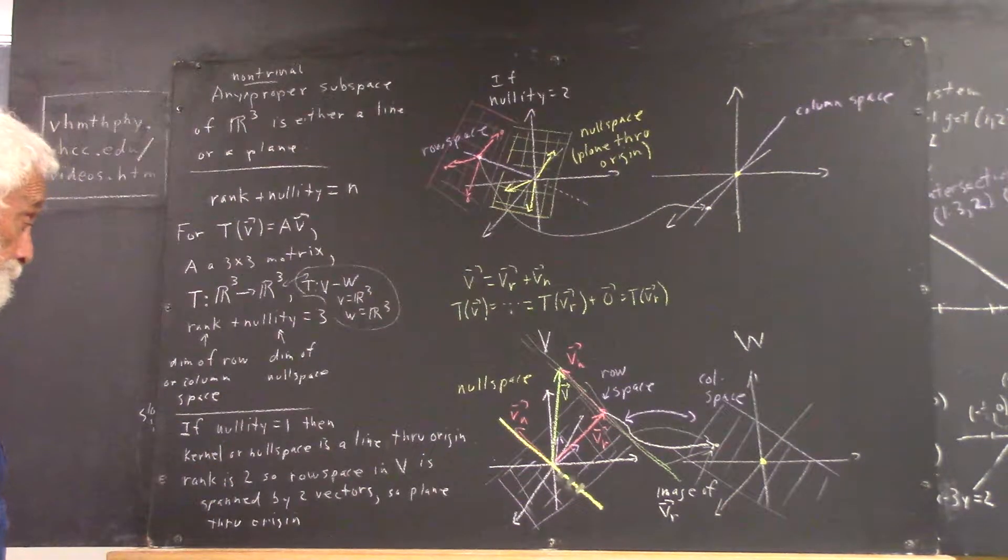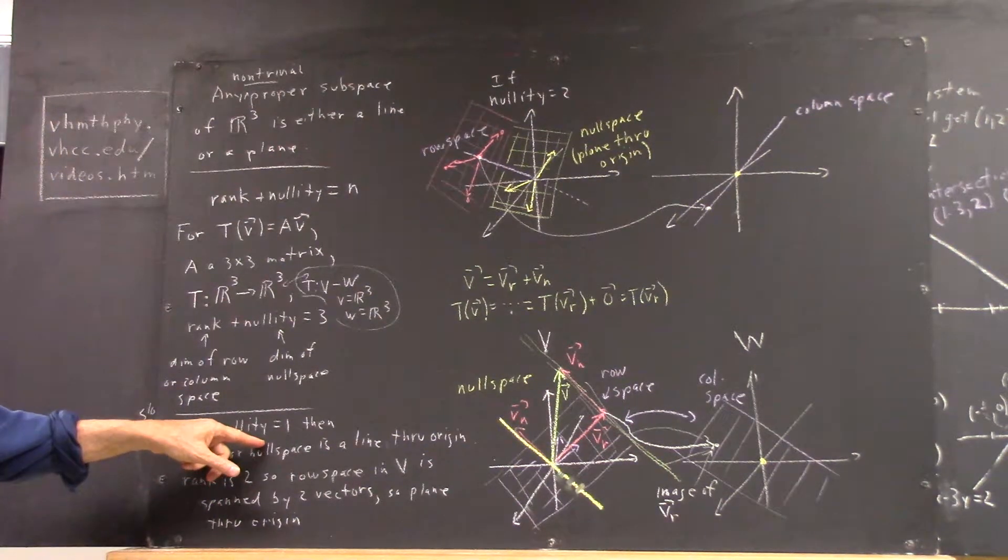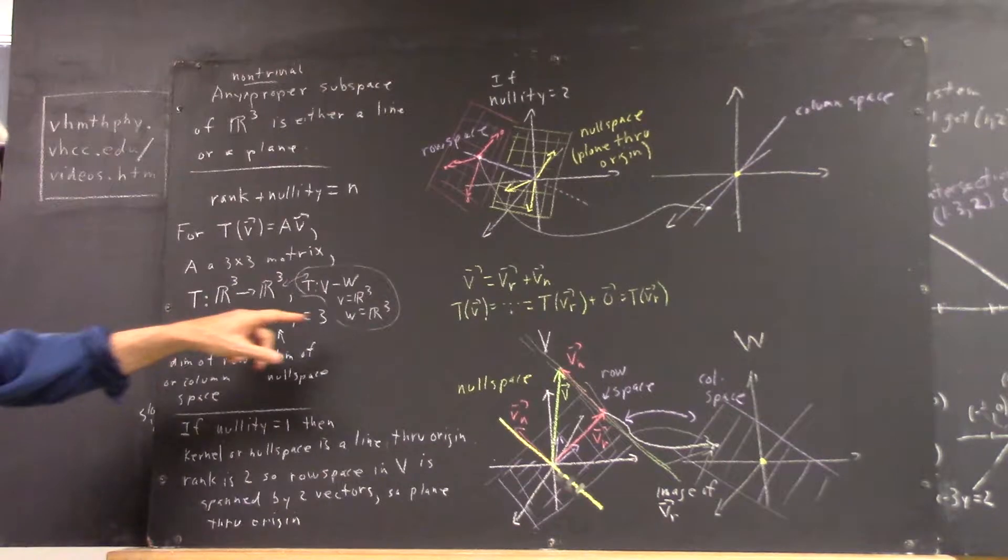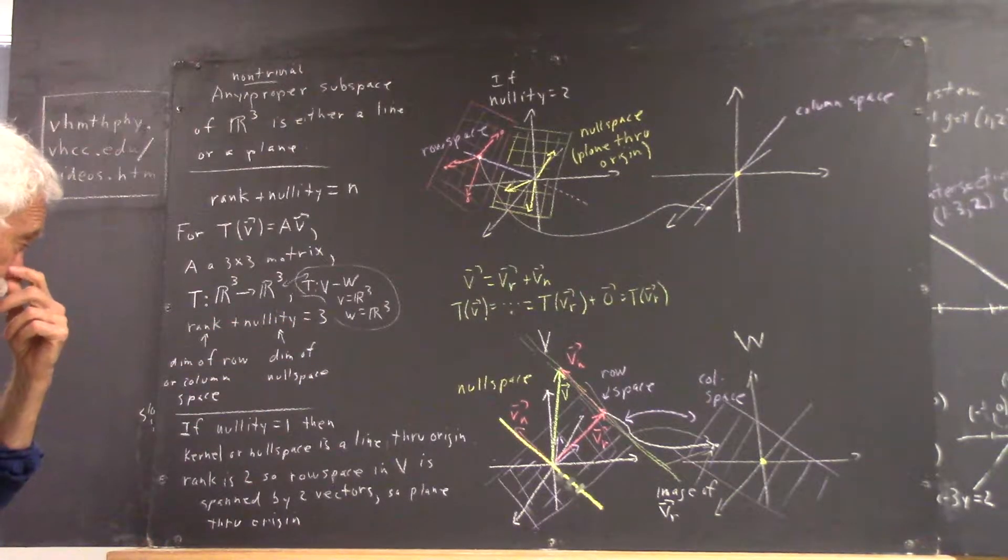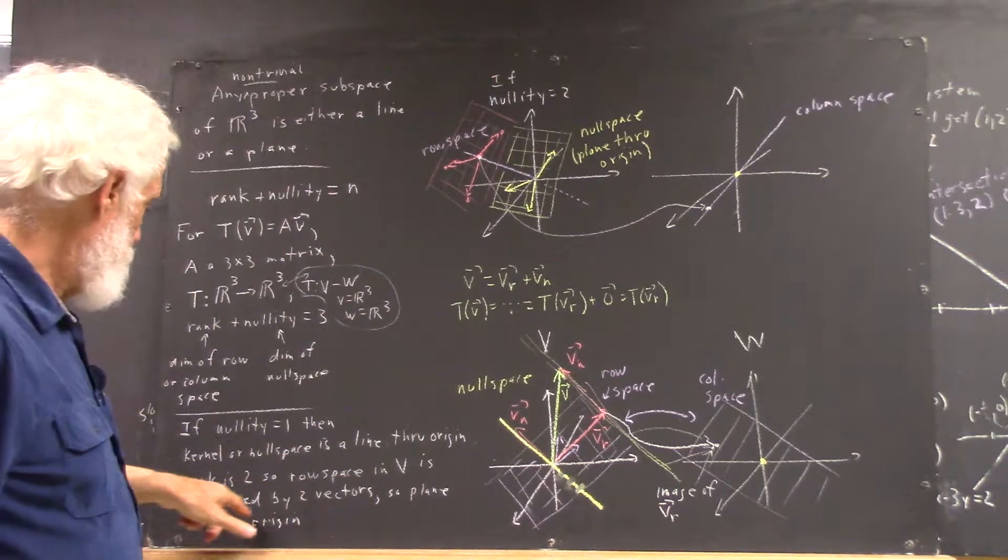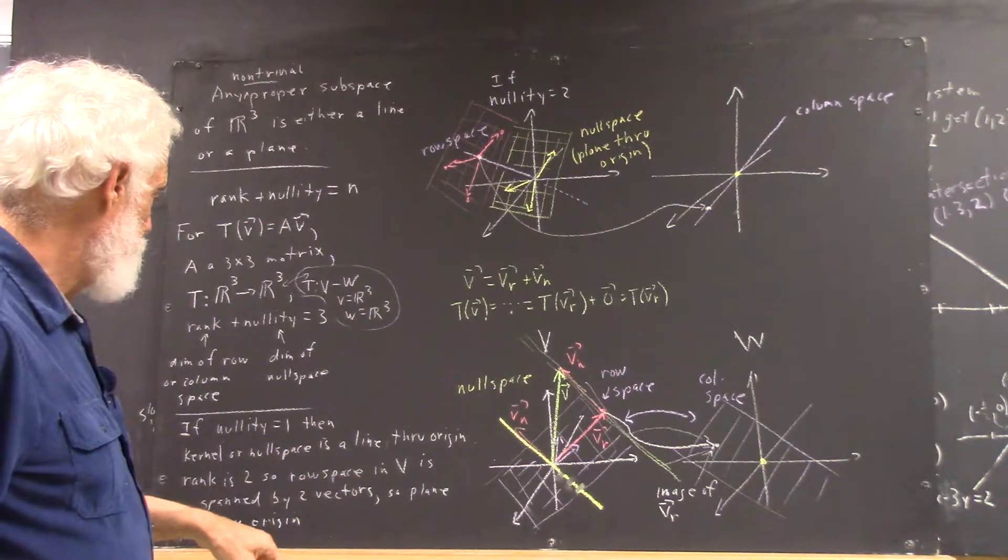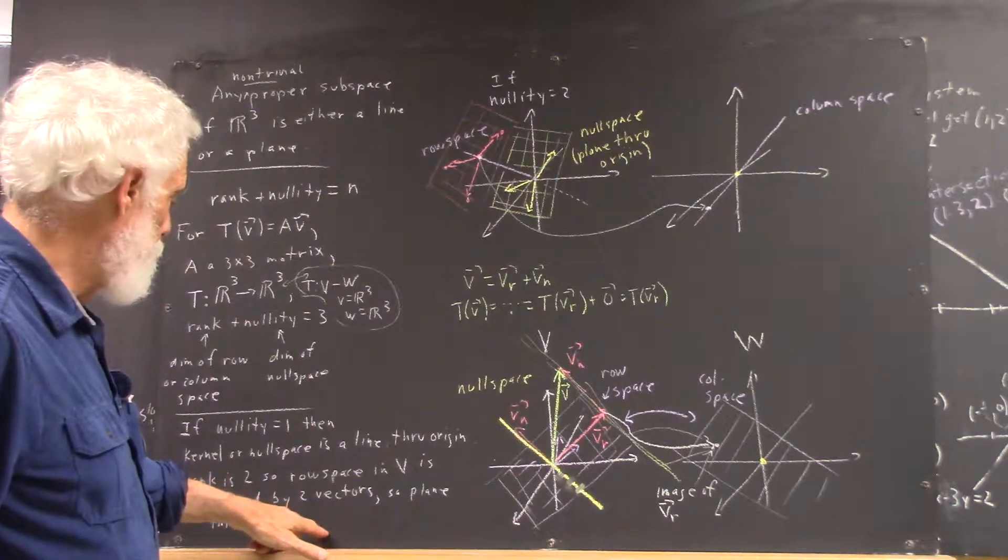If the rank is 2, as it has to be if the nullity is 1, because the rank and nullity have to add up to the dimension of the space, that means your row space in V is spanned by two vectors and is so a plane through the origin.